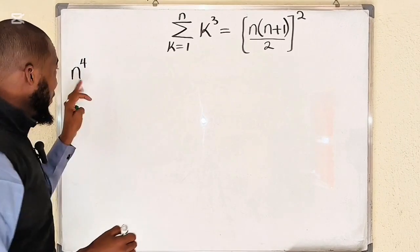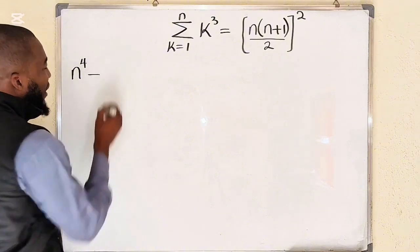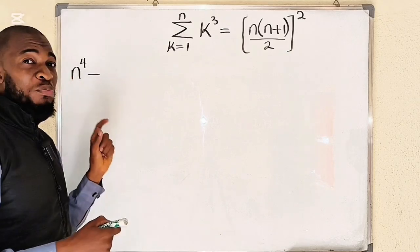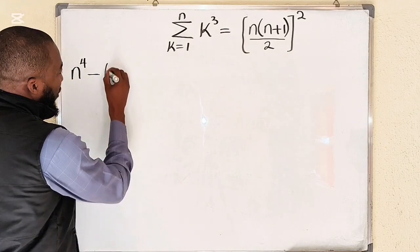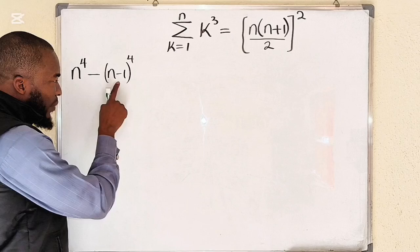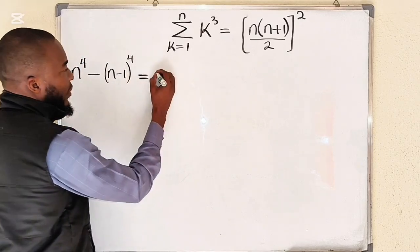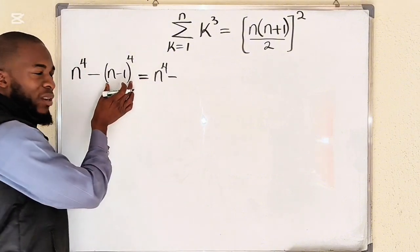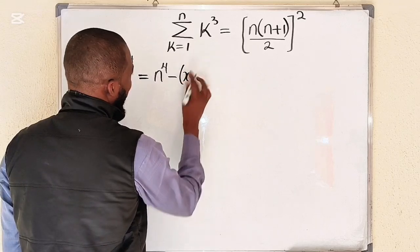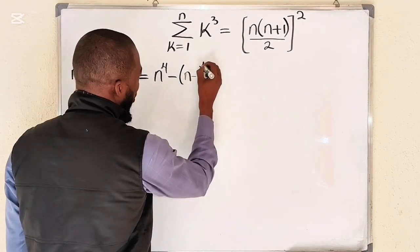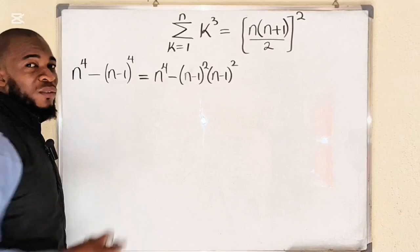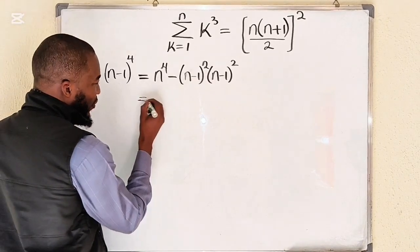To do that, we're going to begin with a number raised to the power of 4. This will represent a certain number minus another number which is 1 less than this number. A number which is 1 less than this number would be n minus 1, also to the power of 4. To simplify this, I would like to expand it first. We can break this into 2: n minus 1 to the power of 2 multiplied by another n minus 1 to the power of 2, which is the same thing as n minus 1 to the power of 4.